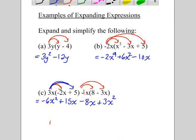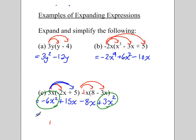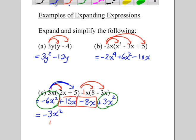And now you're going to collect your like terms. So in this case, you've got negative 6x squared plus 3x squared. That's going to give you negative 3x squared. And then your 15x minus 8x will give you plus 7x.